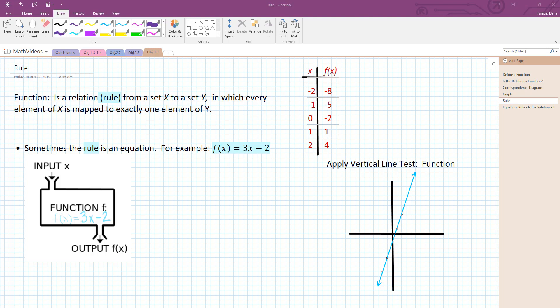Sometimes this rule can come in the form of an equation. For example, we're going to take the relation f(x) = 3x - 2. What that rule is basically saying is you're starting with the independent variable x, tripling it, and then subtracting 2 to get the resultant output, f(x).